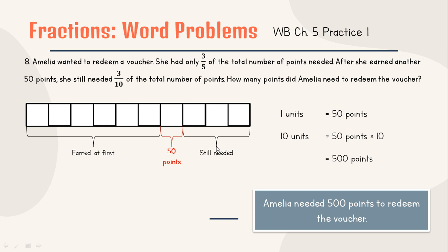3 units times 50 points equals 150 points. So after all of this, Emelia still needed 150 points to redeem the voucher. But for all, Emilia needed 500 points to redeem the voucher.